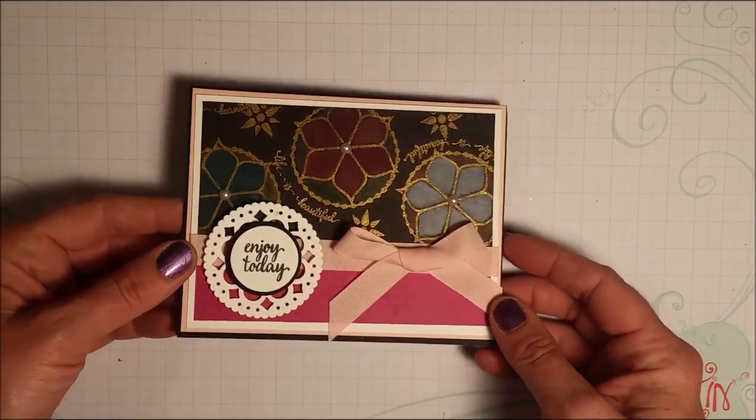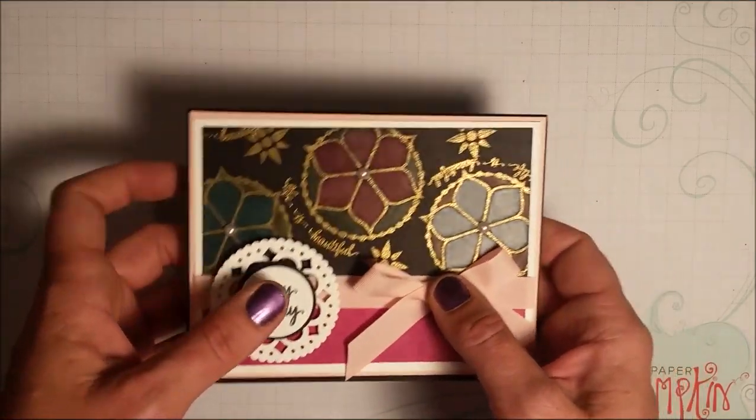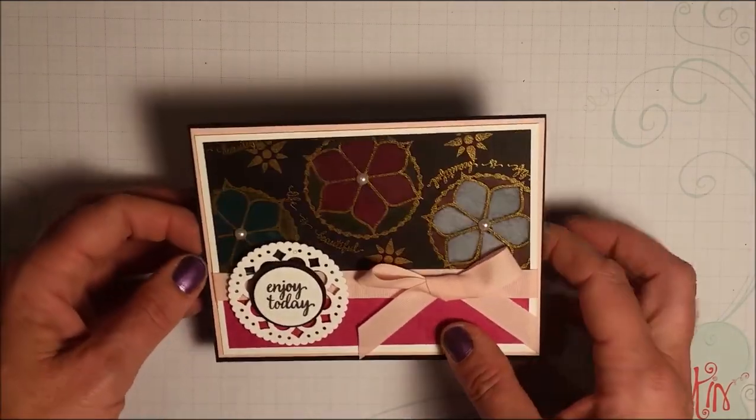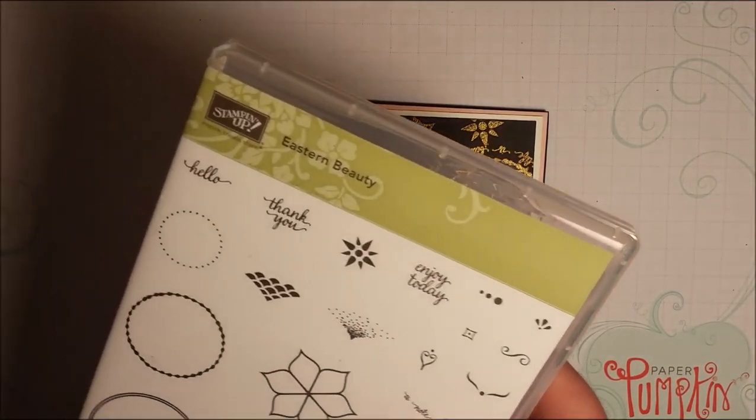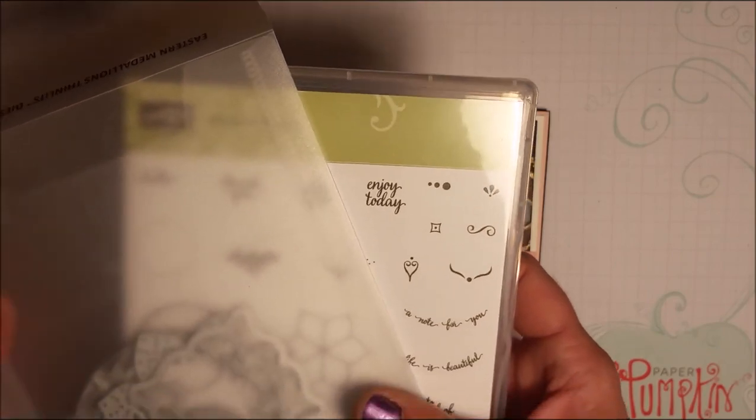Hi friends, today's card features our gorgeous Eastern Palace bundle that is available through Stampin' Up until the end of May, May 31st, 2017. You can buy all of the wonderful products that belong in this bundle and after that they're only sold individually.